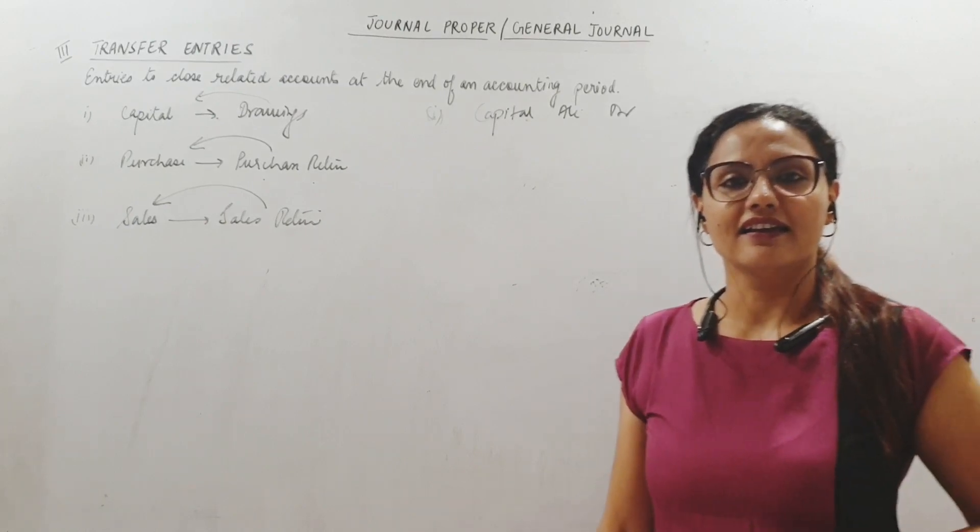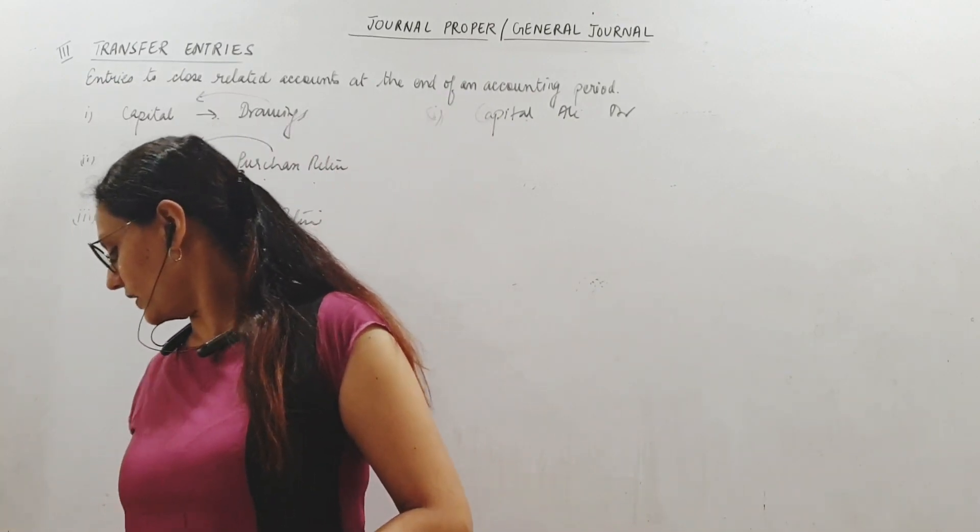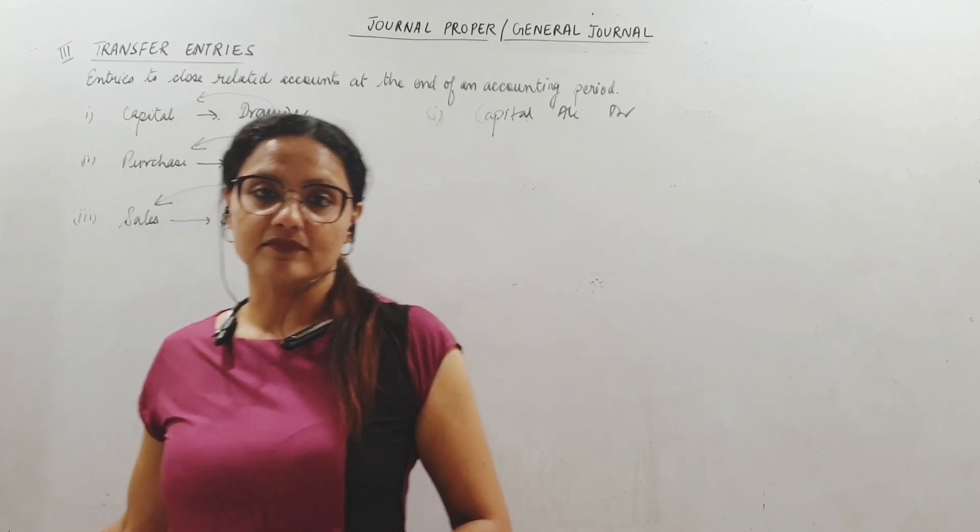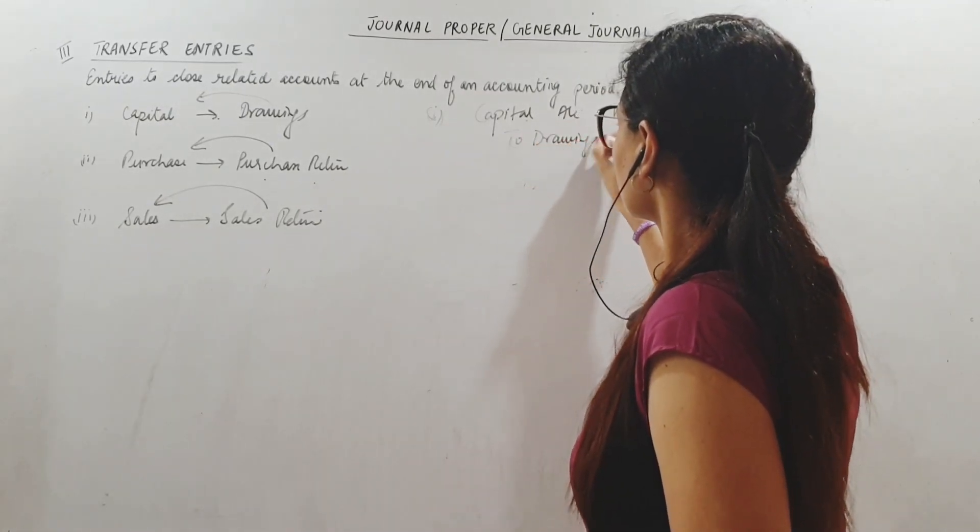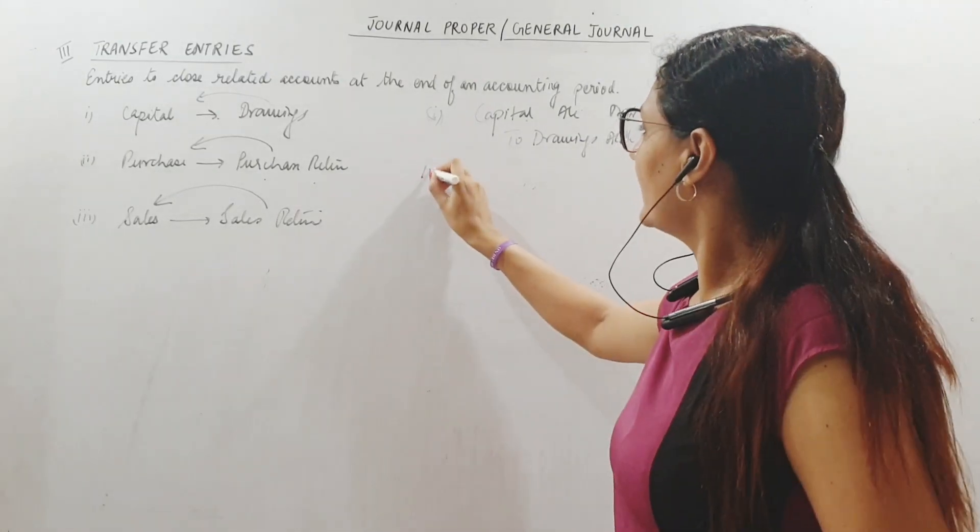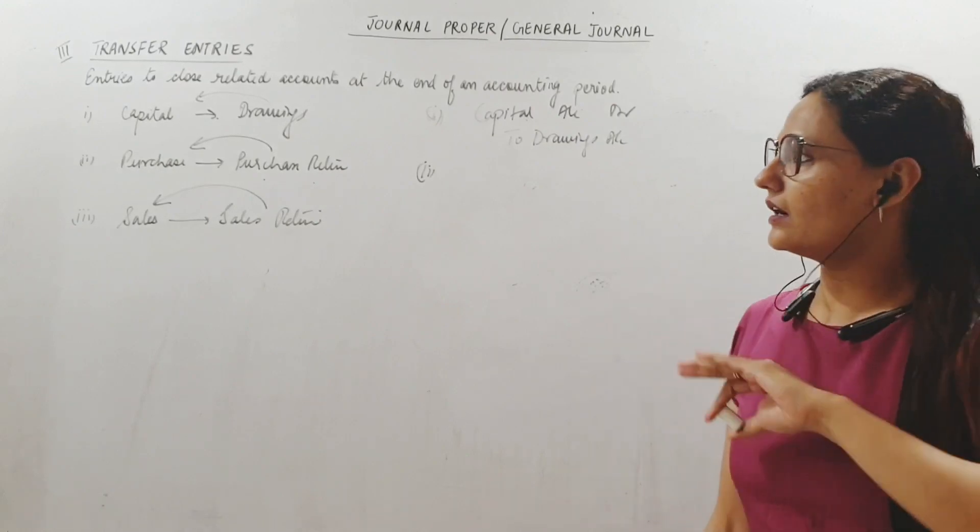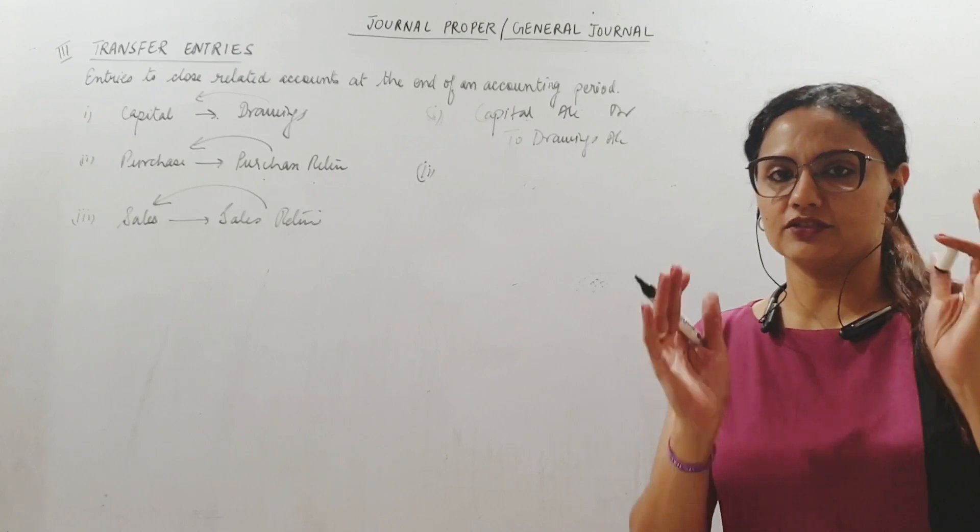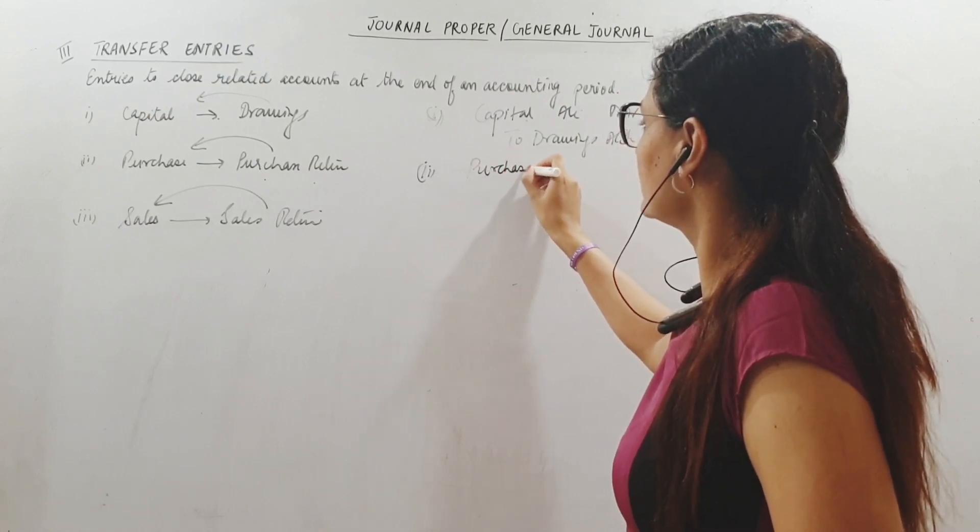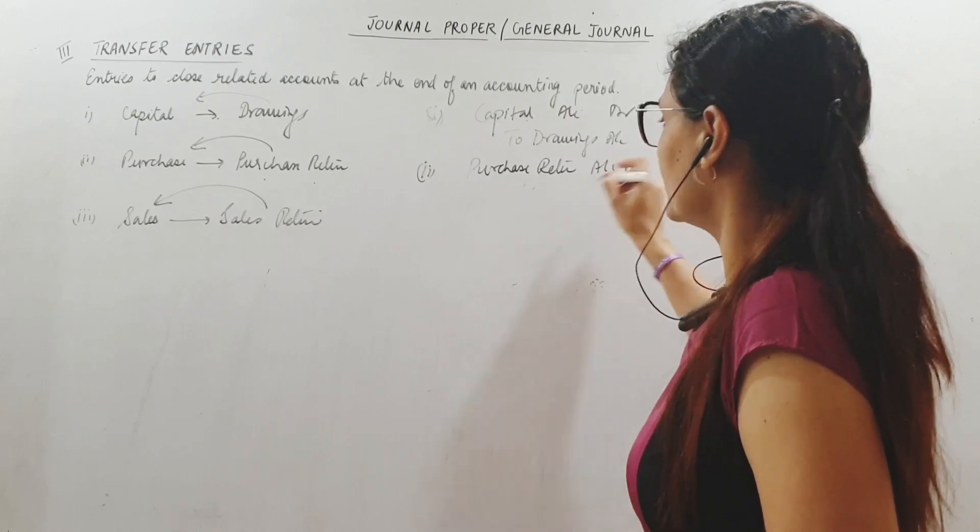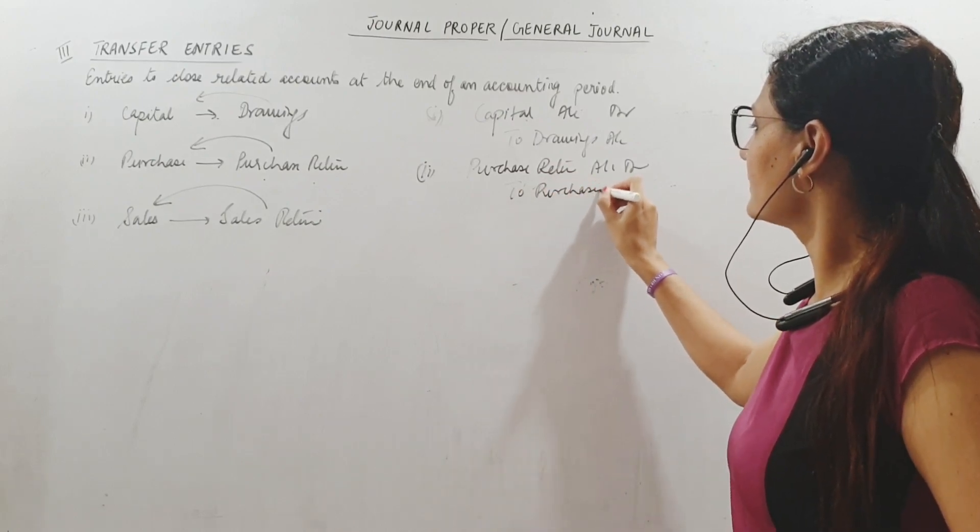Entry number one for closing drawings account and transferring to capital. Drawings is what? Debit always. We debit drawings whenever goods are withdrawn or money is withdrawn by the proprietor. So to close it we will credit. And capital account should be debited. We always credit capital account. Why are we debiting capital? When it increases you credit capital, when it decreases you debit. So here what is happening to capital? It is decreasing, not increasing. Therefore I debit capital account and I credit drawings account.